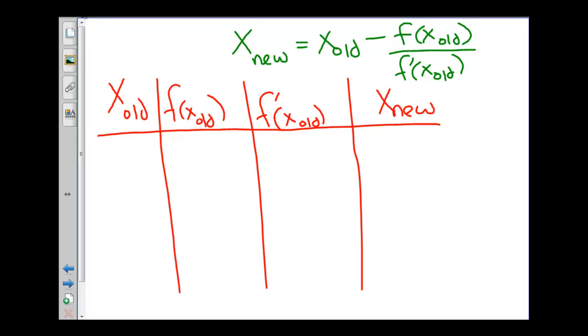And for our particular problem, remember that f of x is x squared minus 2, and f prime of x is 2x.